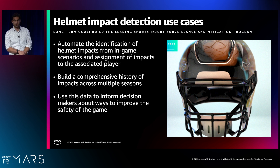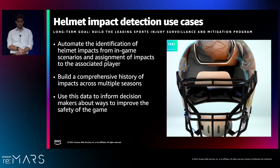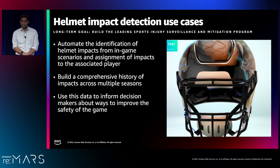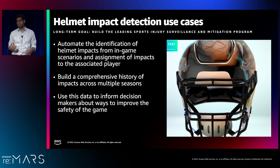Now we're going to dive into a specific project that we're working on with the digital athlete program — the helmet impact detection project. The goal of this project is to automate the process of counting the number of helmet impacts taken on by players during games using computer vision. By automating this process, we can build comprehensive histories of these impacts on players across a season and identify trends. That data will then inform decision makers on how we can improve safety of the game.